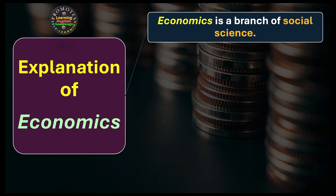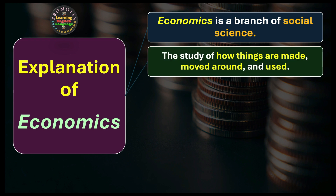Economics is a branch of social science — the study of how things are made, moved around, and used. In economics, we study how things are manufactured and created, how they are brought into existence. Sometimes individuals make things by hand; sometimes big companies manufacture them. After products are made, we try to move them to market so that people can see and use them in their day-to-day lives.